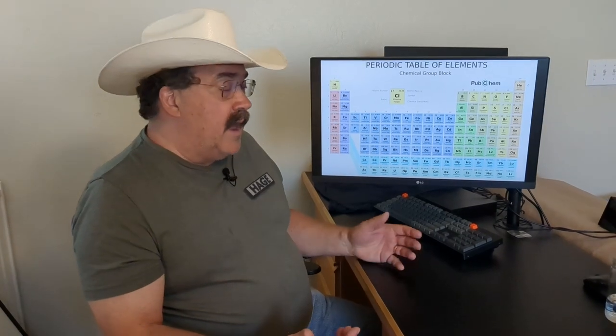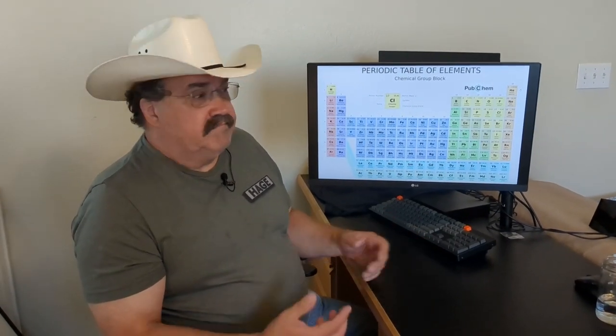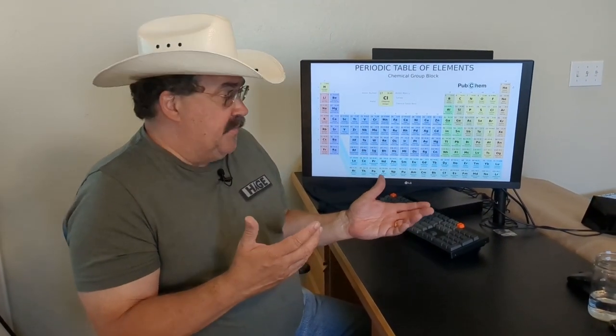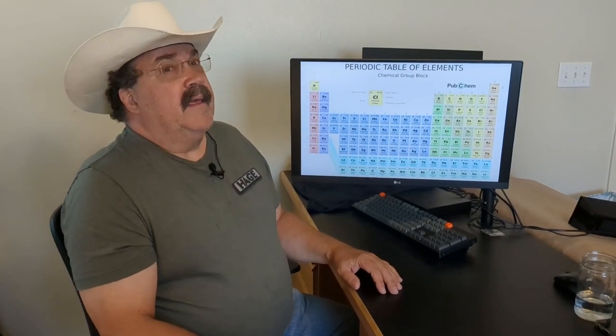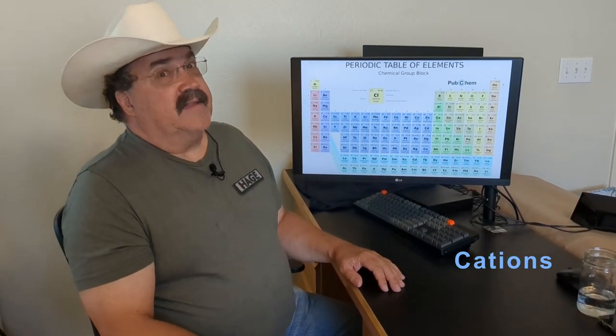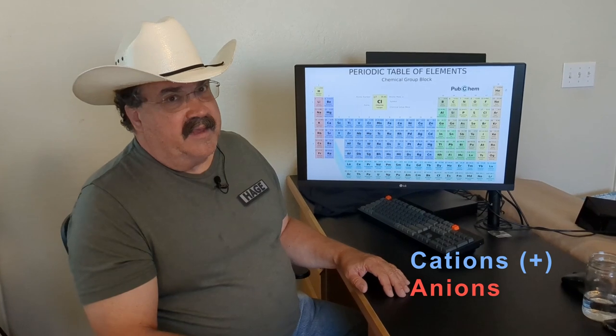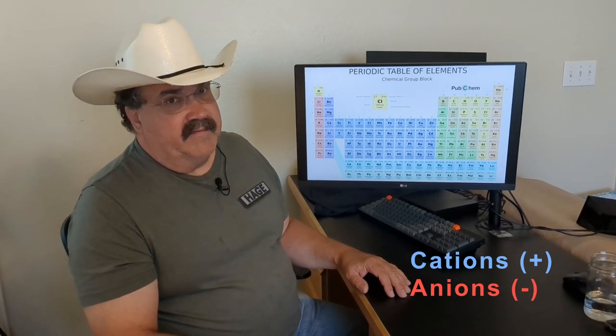What are those? Well, a cation is a positively charged ion. An ion is an atom or a group of atoms that have an electrical charge, positive or negative. Cations are positive, anions are negative.